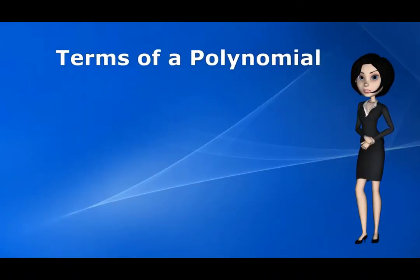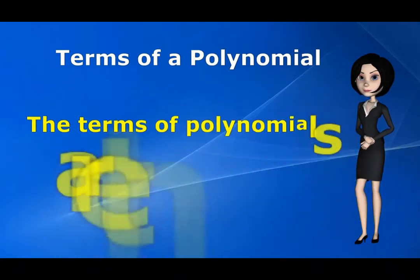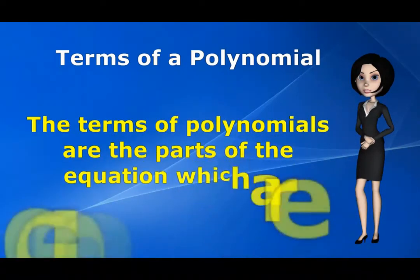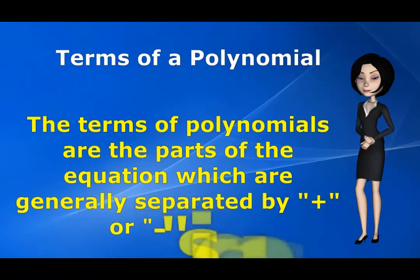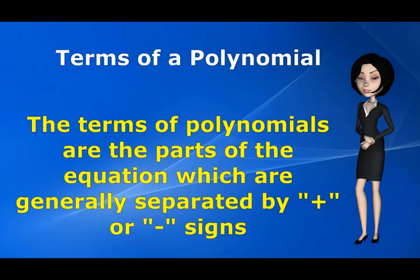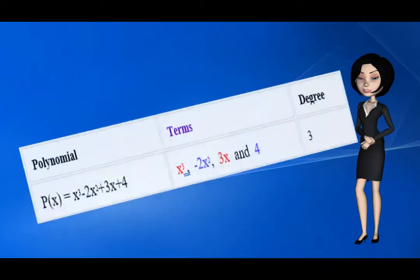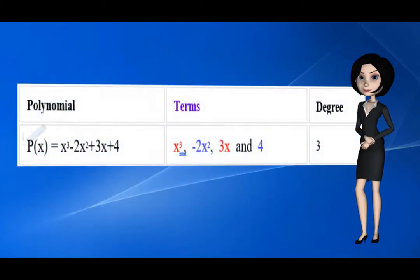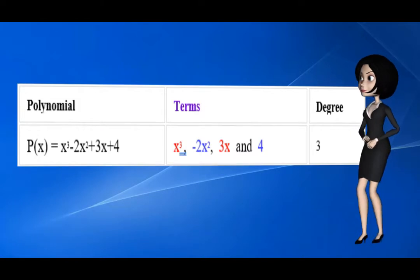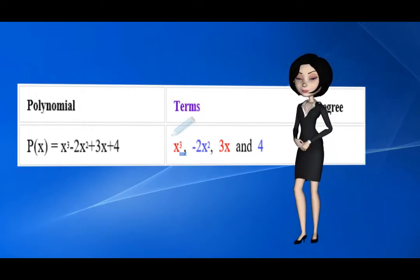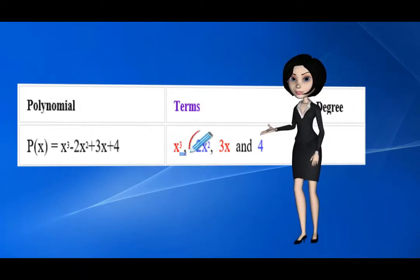Terms of a polynomial. The terms of polynomials are the parts of the equation which are generally separated by plus or minus signs. Let us see an example. In this polynomial, the number of terms are 4. Those are x cubed, minus 2x square, 3x, and 4.